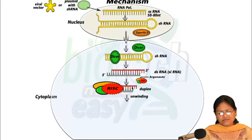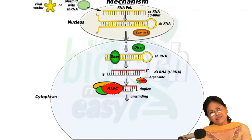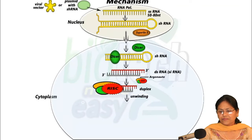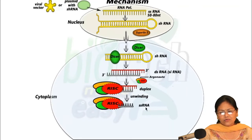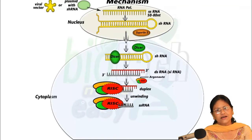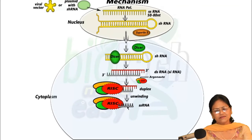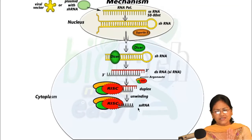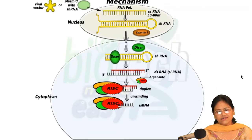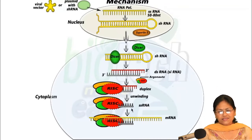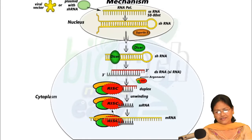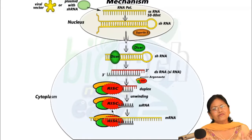Next, unwinding takes place because until now it is a duplex in which pairing is present. The unwinding takes place and out of these two strands, one is called the passenger strand and the other is called the guide strand. Only the guide strand remains attached to RISC; the passenger strand after unwinding goes into the cytoplasm and is degraded. So now it is single-stranded RNA.